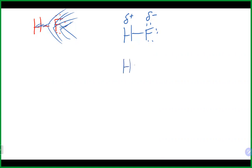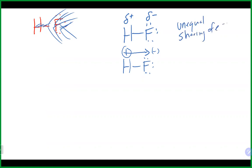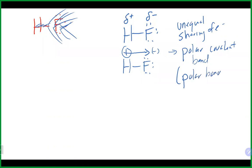We can represent this unequal sharing with an arrow pointing toward the more negative side (the fluorine), with the tail of the arrow making a plus sign at the more positive side (the hydrogen). The electrons are still being shared — just unequally. This type of bond is known as a polar covalent bond, or just a polar bond — it represents unequal sharing of electrons.